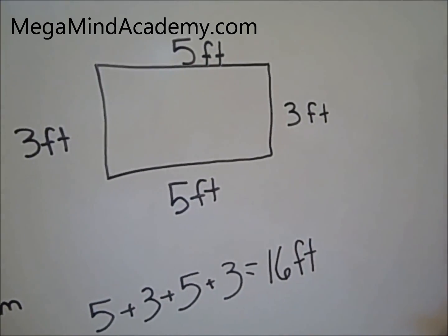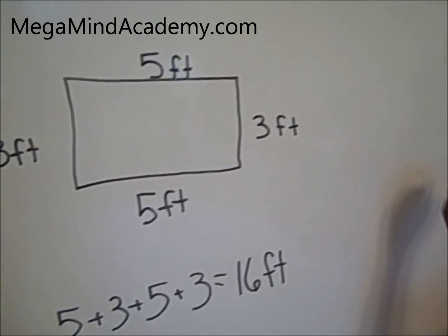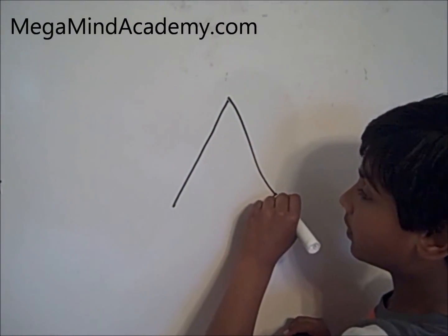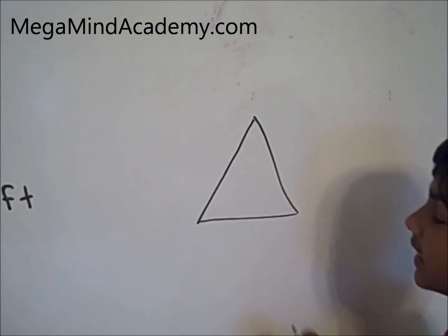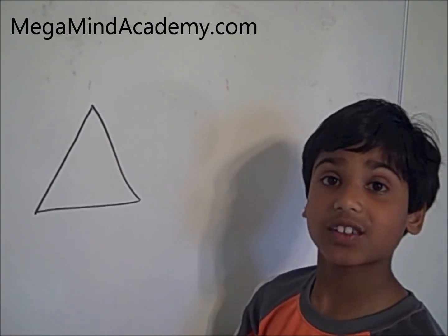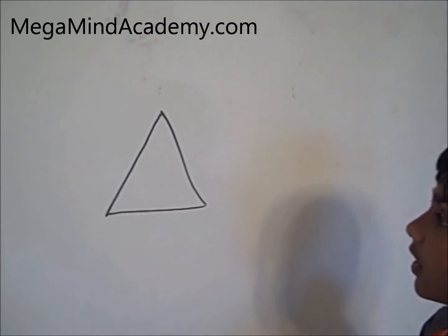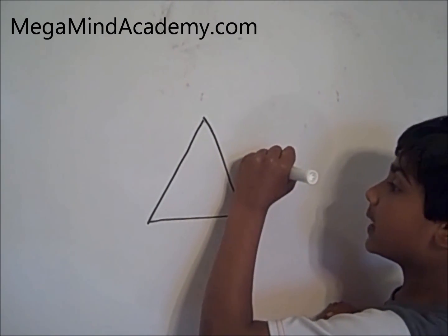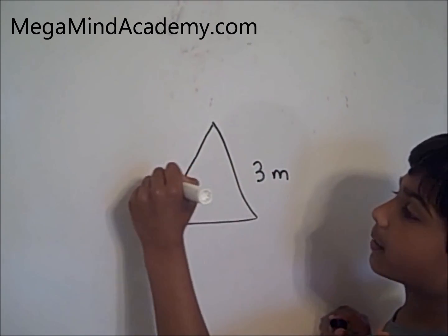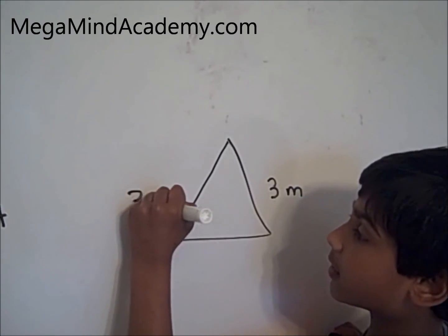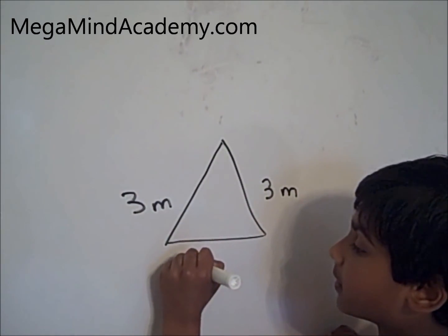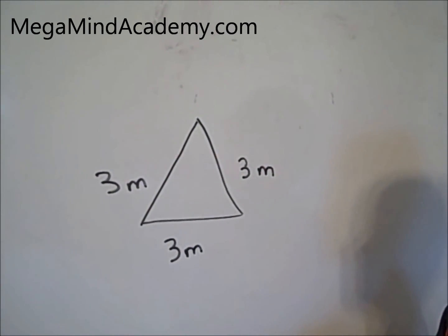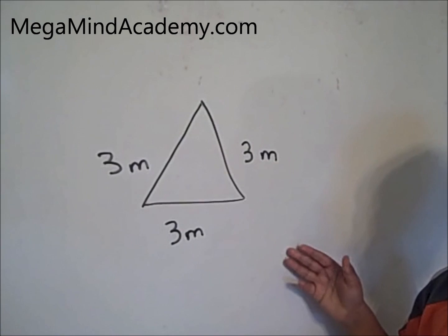Now let's move on to a triangle — an equilateral triangle. An equilateral triangle has all sides the same. So if this is 3 meters, this will be 3 meters, this will be 3 meters too. In order to find the parameter of this triangle, we need to add up all the 3 sides.